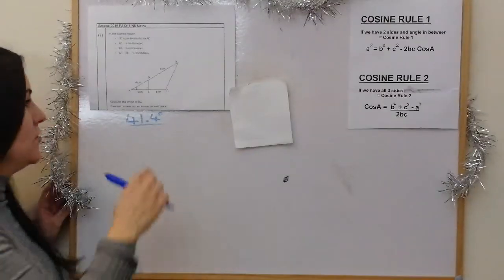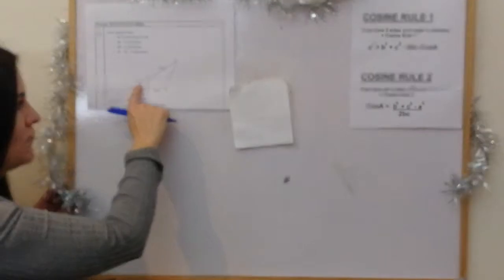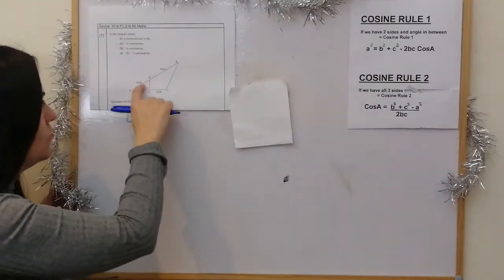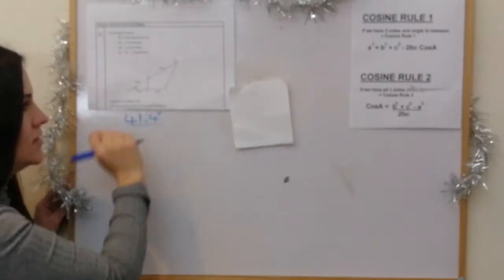We now have this angle, which is 41.4 degrees. We also have this side, because obviously we can just add those two together. So this side would be 10 centimeters, and this side would be 6 centimeters.